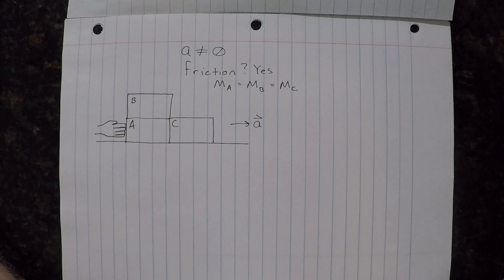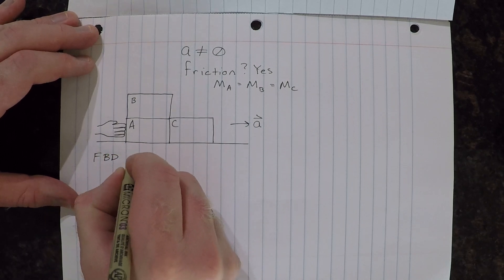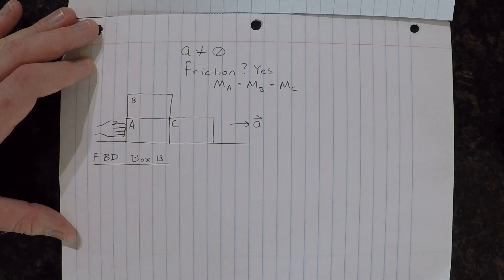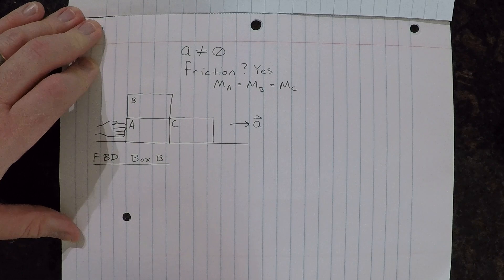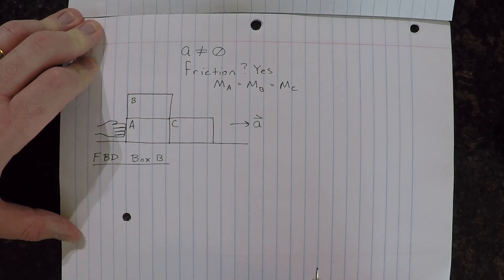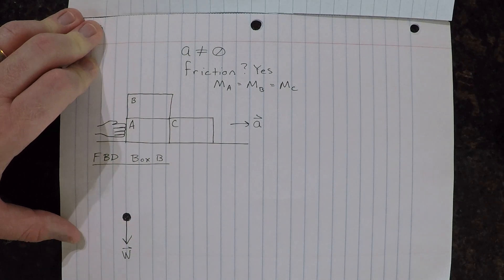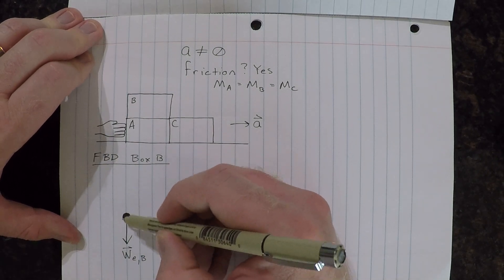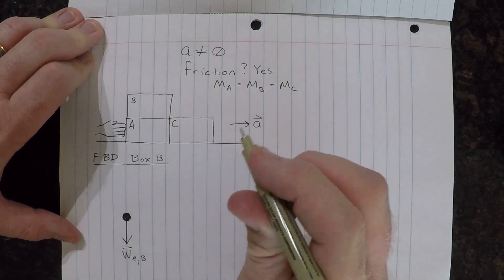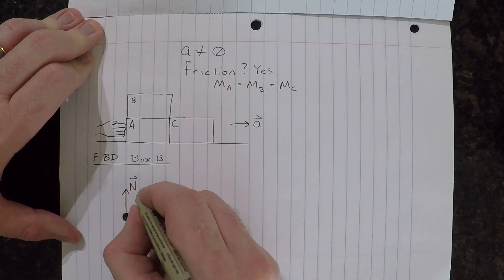The easiest way to do this is to draw a free body diagram for B first. So let's draw the FBD for box B. Just like any free body diagram, we're going to draw a dot to represent the box. We'll draw an arrow for the gravitational force of Earth on box B — that's going to be the weight, pointing downward, labeled as W of Earth on B. In order to balance this out and have no acceleration in the vertical, we have a normal force — the upward pushing force of A on B — the same size. So I'll write normal of A on B.